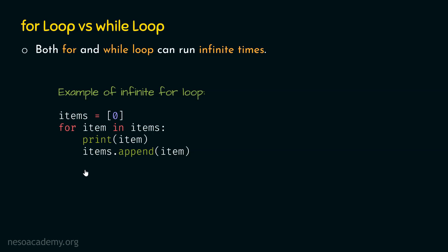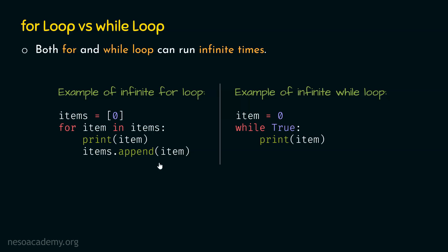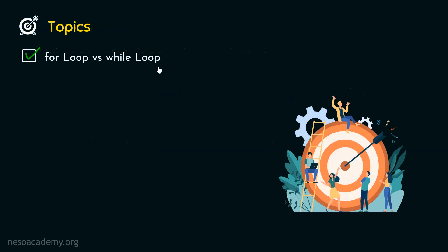This is an example of infinite for loop. Now let's see the example of infinite while loop: item = 0, while True, print item. Here the condition is always true and there is no termination criteria, meaning this loop will run infinite times and we will get a lot of zeros on the screen. With these examples, it is clear what the difference between infinite for loop and infinite while loop is. We can also write an infinite for loop. With this, we are done with the topic of for loop versus while loop.